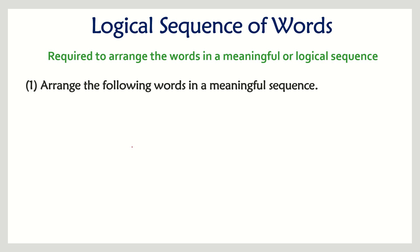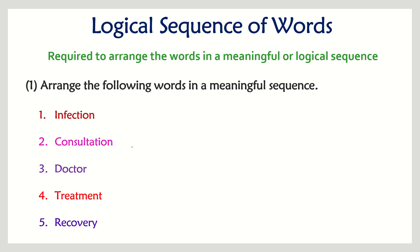Let's see the first question: arrange the following words in a meaningful sequence. The words are: infection, consultation, doctor, treatment, and recovery. Among these five options, what could be the exact sequence — who comes first, second, third, fourth, and last? I'll give you some time to look at which could be the correct option.